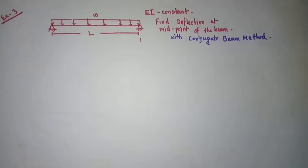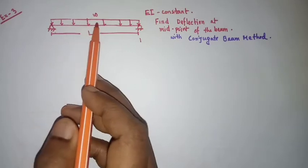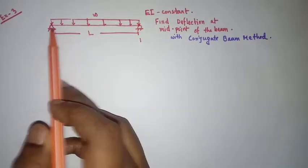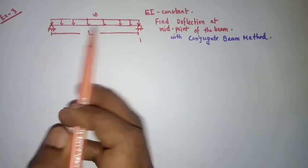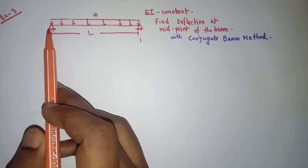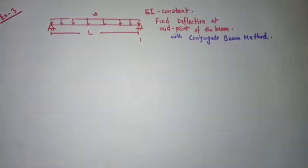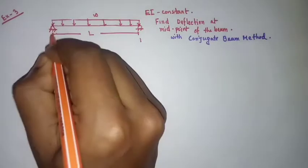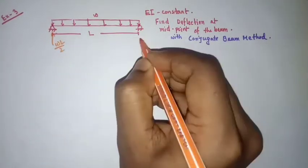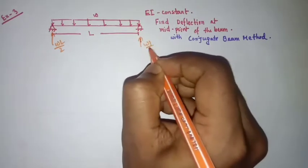Assalamualaikum viewers. Today I am going to solve this kind of problem with the conjugate beam method. The beam is loaded with a distributed load and two supports — it's a simply supported beam with hinge support and roller support. You have to find deflection with the conjugate beam method. Here is the reaction: this is ωL/2 and here is ωL/2.